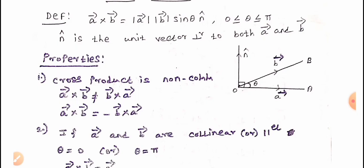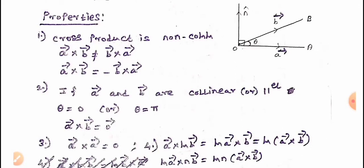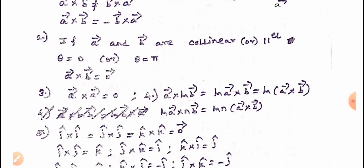Properties of cross product. First property: cross product is non-commutative — A cross B is not equal to B cross A, but A vector cross B vector equals minus B vector cross A vector. Second property: if A vector and B vector are collinear or parallel, theta equals 0 or theta equals pi, then A vector cross B vector equals zero vector.